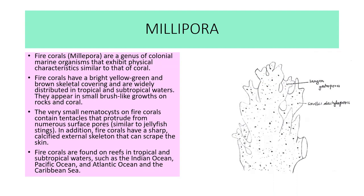Millipora, or fire coral, is a genus of colonial marine organisms with physical characteristics similar to coral. Fire corals have a bright yellow, green, or brown skeleton and are widely distributed in tropical and subtropical waters, appearing as small brush-like outgrowths on rocks and corals. Very small nematocysts protrude from numerous surface pores, similar to jellyfish stings. Additionally, fire corals have a sharp calcified external skeleton that can scrape the skin. They are found on reefs in the Indian Ocean, Pacific Ocean, and Atlantic Ocean.